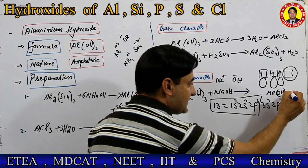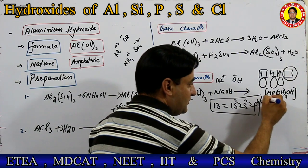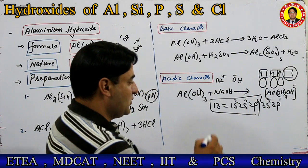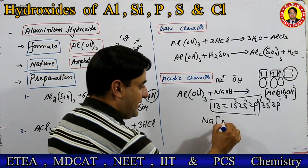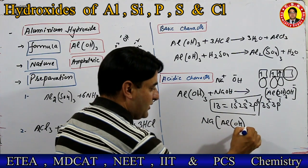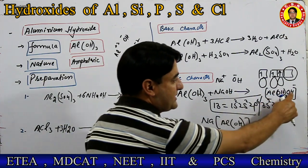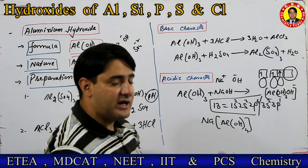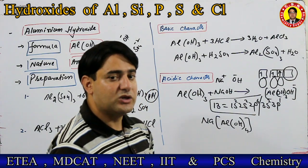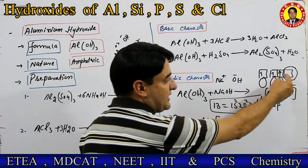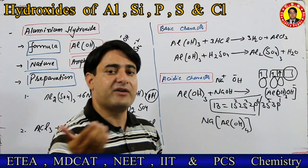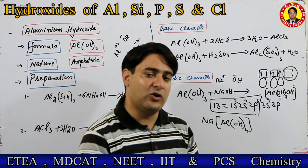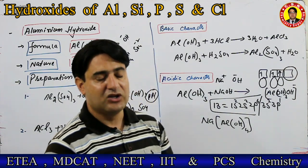یعنی aluminium central metal atom کے طور پر کام کرے گا اور یہ hydroxyl ligand کے طور پر کام کرے گا — coordinate covalent bond بنائے گا۔ تو کیا بنے گا — پہلے Al(OH)₃ تھا، ساتھ OH⁻ نے bond بنایا — تو [Al(OH)₄]⁻ بنے گا اور sodium کے ساتھ Na⁺ ہے — final product NaAl(OH)₄ بنے گا۔ جو چیز lone pair of electrons gain کر سکے وہ Lewis acid ہوتی ہے — یاد رکھیں۔